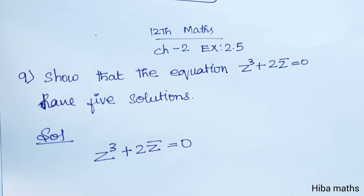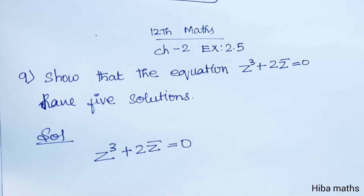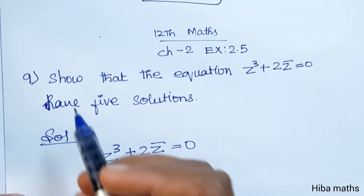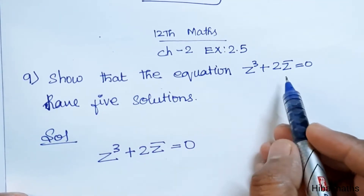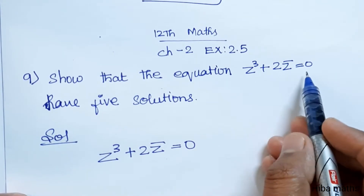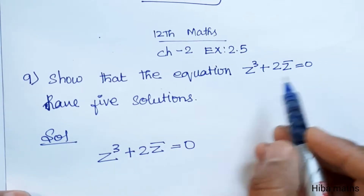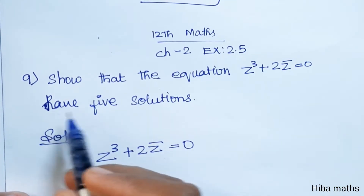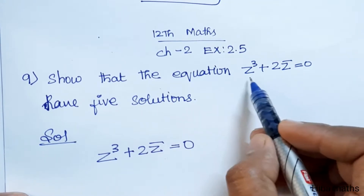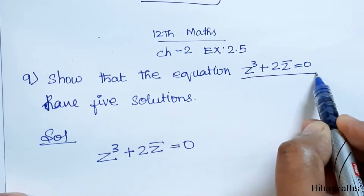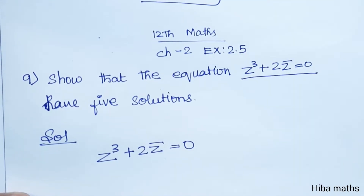Hello students, welcome to Hibamax 12th Standard Max Chapter 2, Exercise 2.5, 9th question. Show that the equation Z³ + 2Z̄ = 0 has 5 solutions. Let's prove the solution to this equation.